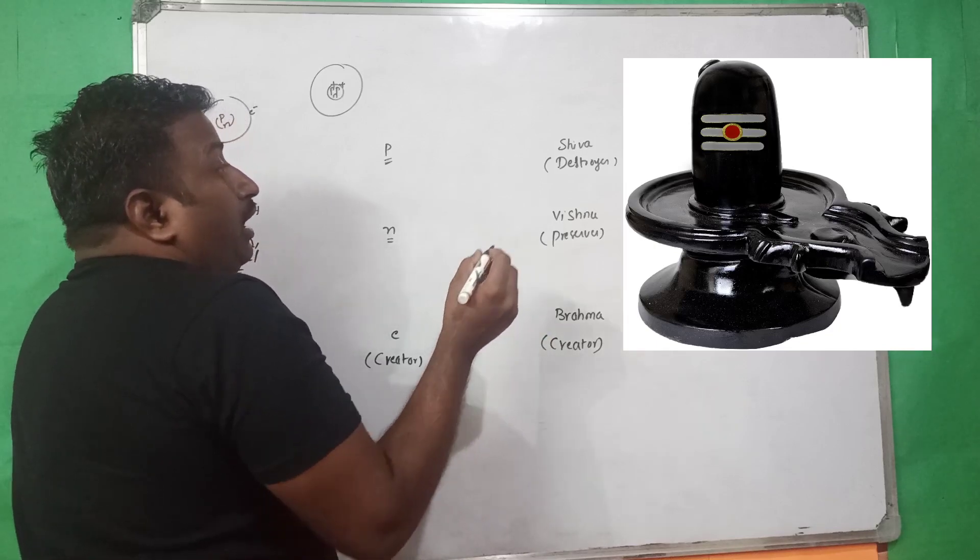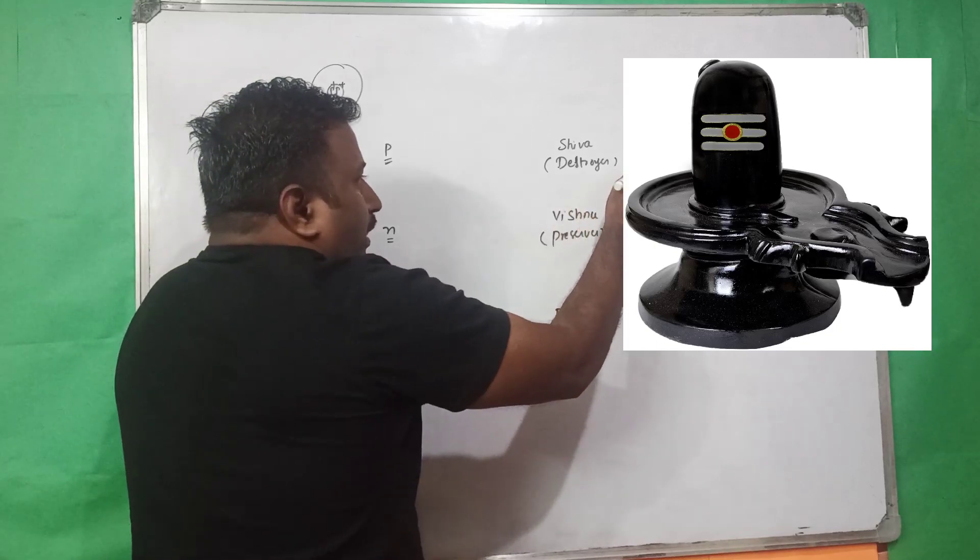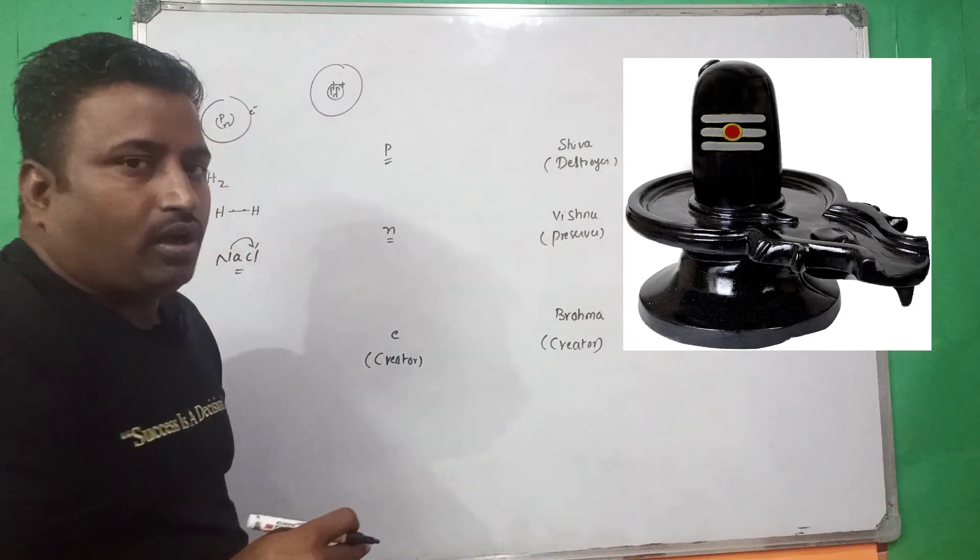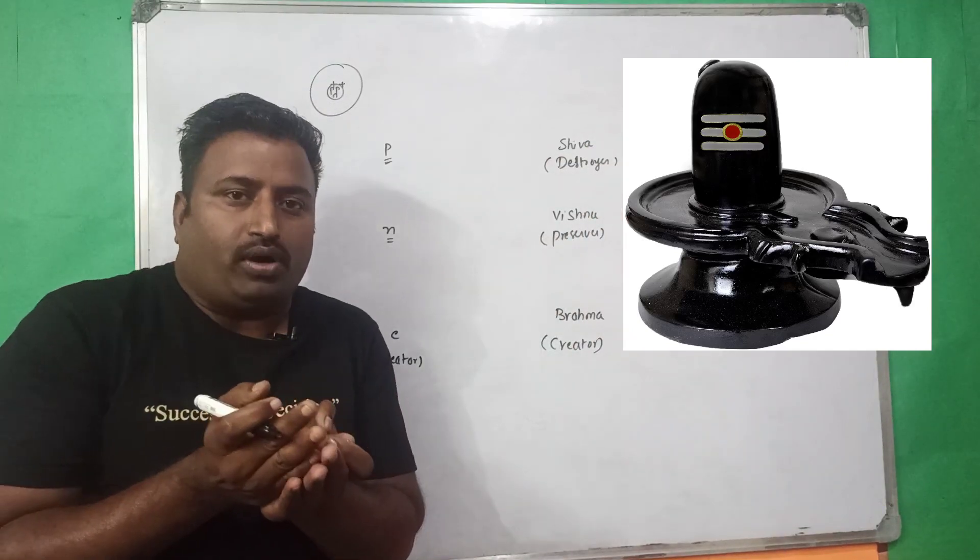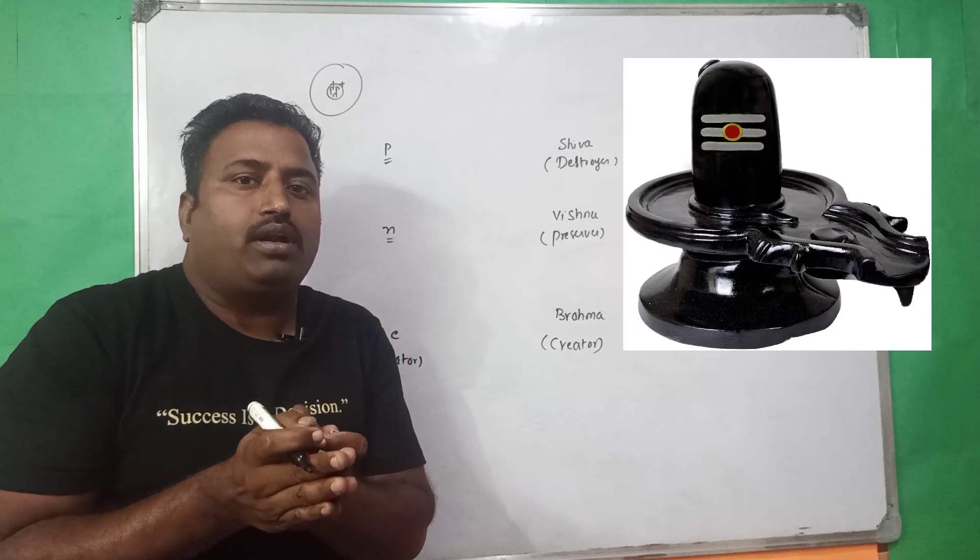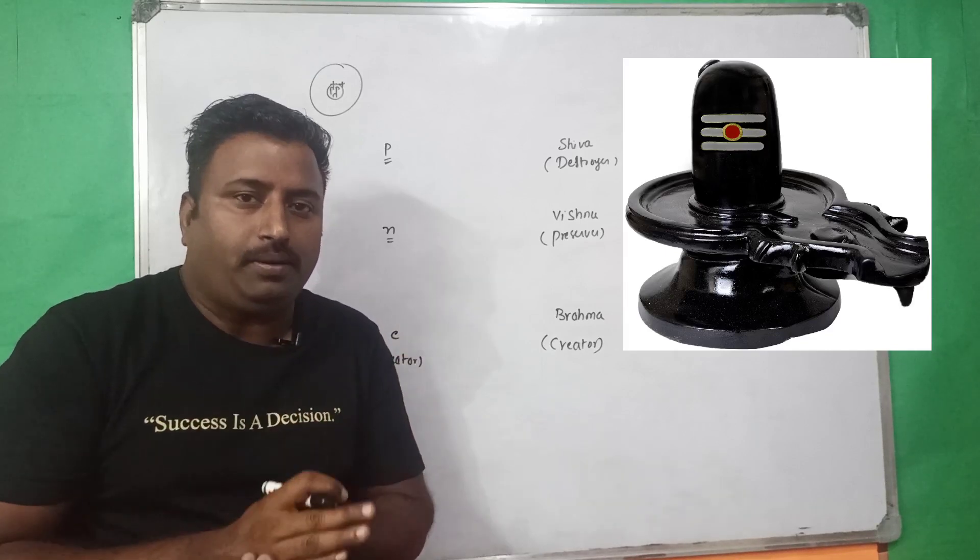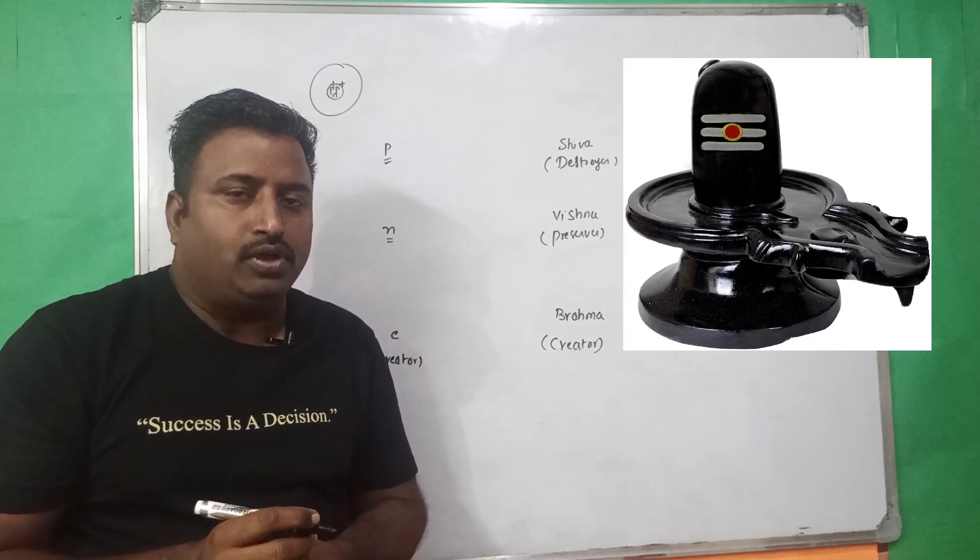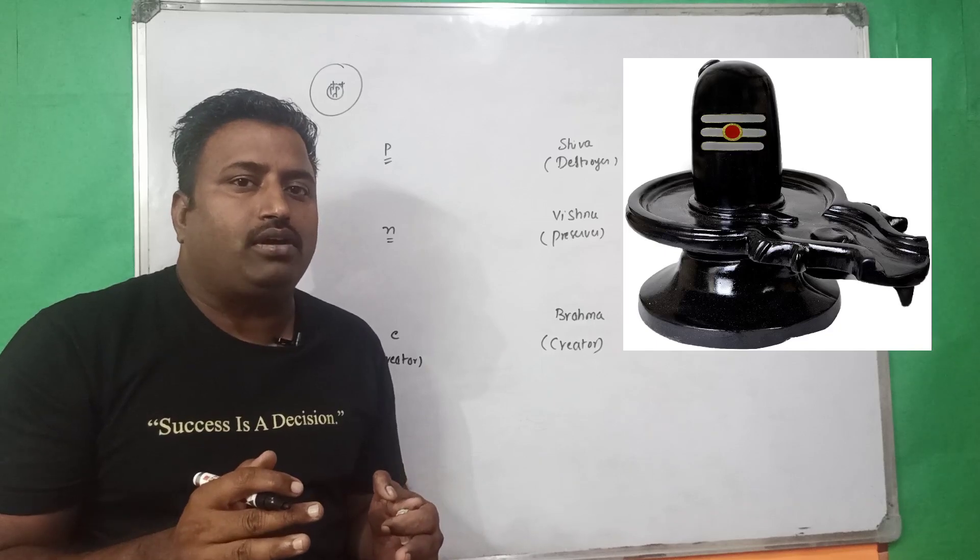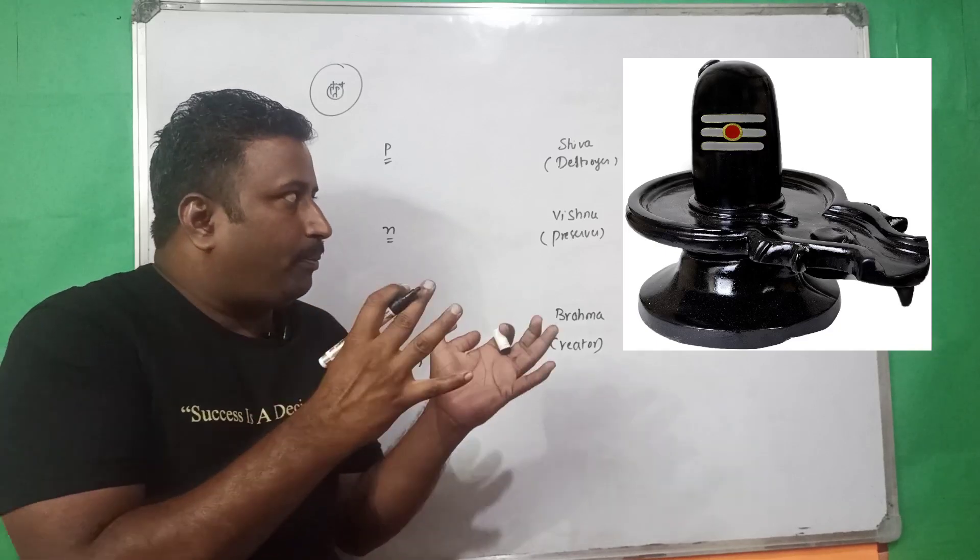Now, the Shiva or the upper part of the Lingam is always kept under water. There will be some amount of water or the cooling agent will be kept on Shiva Lingam to control the radiation effect of the top part of the Lingam.